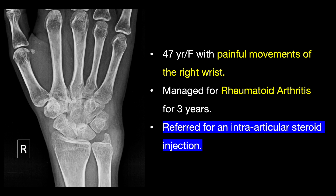A 47-year-old lady with a history of rheumatoid arthritis for 3 years was referred for an intra-articular injection of the right wrist. She had painful wrist movements, primarily during pronation and supination. The PA radiograph shows mild periarticular osteopenia with periarticular soft tissue density along the ulnar aspect of the wrist.